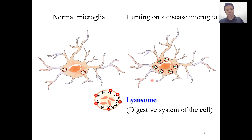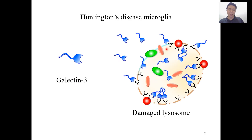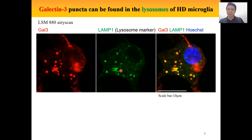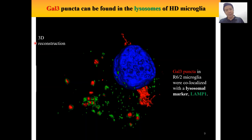Besides, there are also more lysosomes in the Huntington's disease microglia. A portion of lysosomes are actually damaged in the Huntington's disease microglia, and interestingly, it recruited a lot of galectin-3 to accumulate in the lysosomes. From confocal microscopy, you can see that the signals of galectin-3 appear as puncta and co-localize with the signals of lysosomes. From 3D image reconstructions, we see that a lot of these damaged lysosomes contain galectin-3 inside of them.